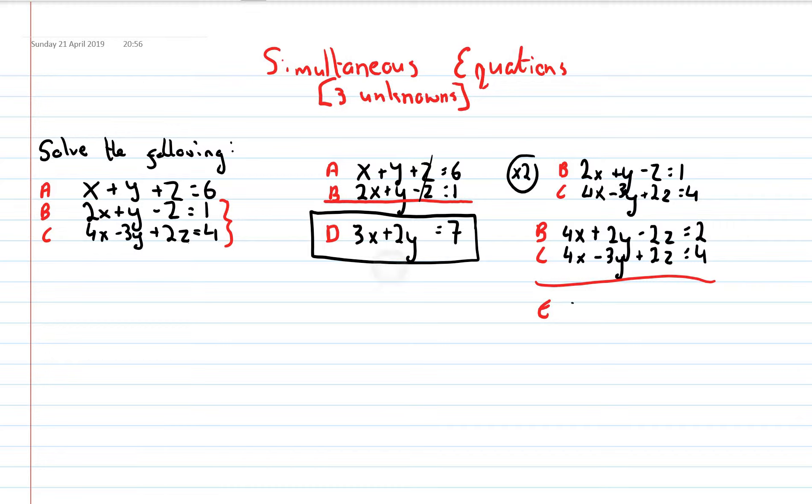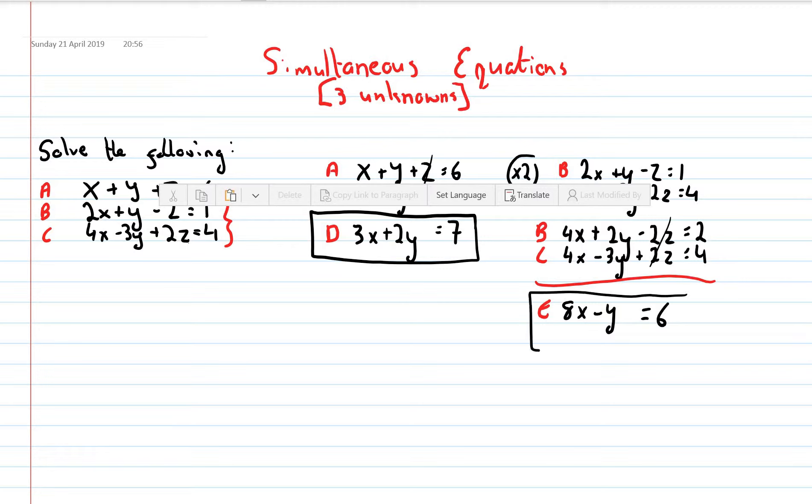So, 4x and 4x is 8x, and 2y and minus 3y is just a plus y, and minus 2z and 2z is nothing that they cancel out. I'll add to 0, and that equals 2 and 4, which is 6. And, sorry, that should be minus, because 2y and minus 3y is minus y. So, there we go, we have our equation E.